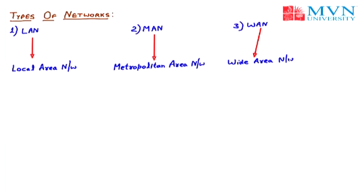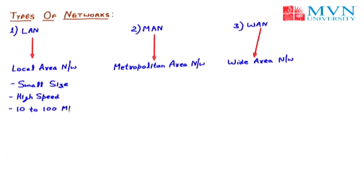Whenever we have a very small group of computers in a network, that is called a LAN. Examples include any building, any lab, or a college. LAN has specific properties: small size and high speed. The speed in a LAN ranges from 10 Mbps to 100 Mbps.